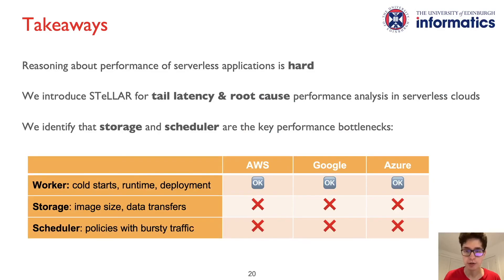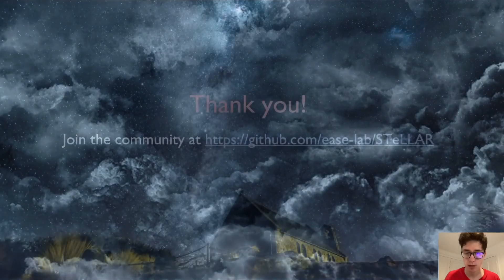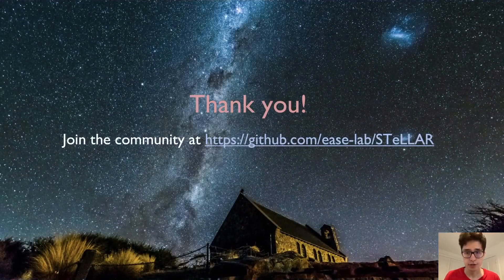Reasoning about the performance of applications running in serverless clouds is difficult because the cloud infrastructure is obscure to cloud users. Our work introduces Stellar, an open-source serverless benchmark and framework that enables performance and tail latency analysis of serverless clouds without access to their proprietary components. Our analysis identifies that modern serverless clouds have the same fundamentally required components — namely the scheduler, the storage service, and the worker node fleet — and that the storage and the scheduler are the key performance bottlenecks across all three leading providers benchmarked. Check our framework online and join the community on GitHub. Thank you.